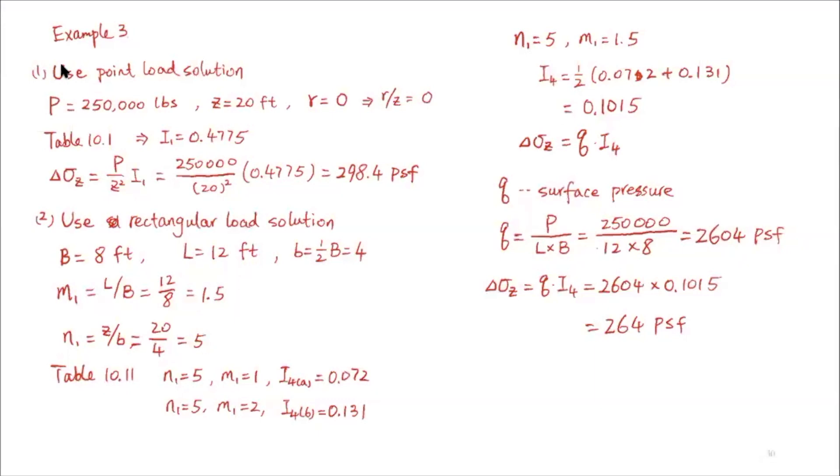Now let's compare the two values. For this case, the point load is not a very good approximation. The reason is that the depth Z of 20 feet is fairly close to the surface. If you look at the dimensions, twice the length is 24 feet, so Z equals 20 is still quite close to the surface. That's why the point load solution doesn't work well here.